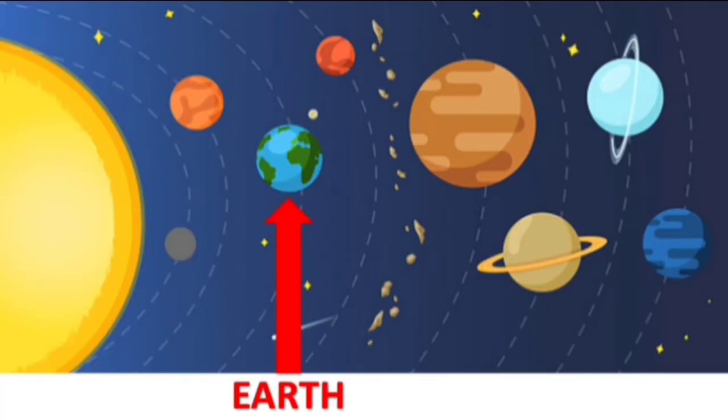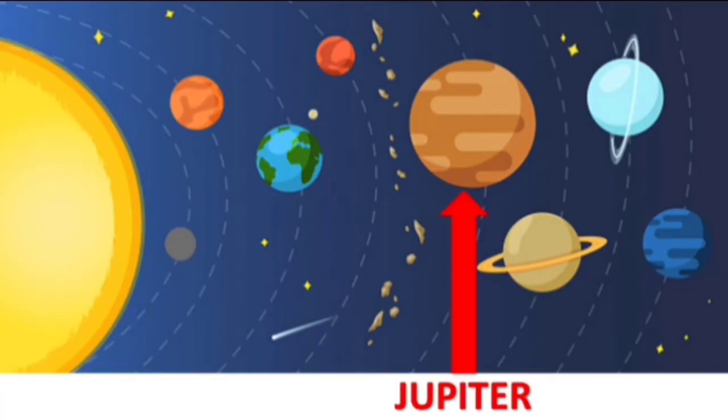The fourth planet from the Sun is called Mars. We call it the red planet because it's very very red. The fifth planet from the Sun is called Jupiter. It's brown and orange and it's the biggest planet in the solar system, two times bigger than all the other planets combined.